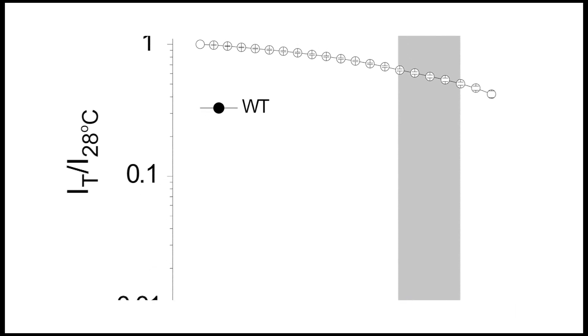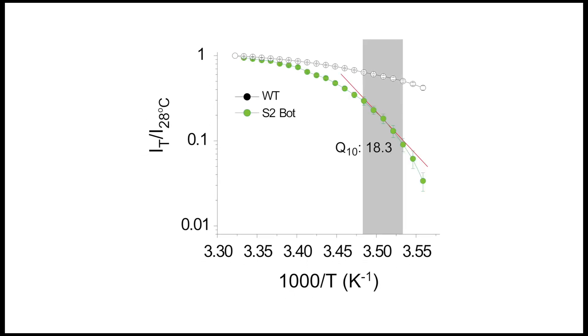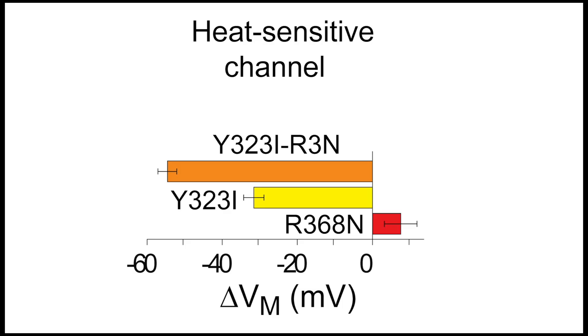We systematically changed the polarity of sites that are believed to undergo changes in solvation during the gating cycle and found that these mutants have now become temperature sensitive. In fact, some of these mutants are as temperature sensitive as naturally occurring TRP channels. Another principle that we tested is the idea of a reciprocal relationship between voltage dependence and temperature sensitivity. Most naturally occurring temperature-sensitive channels have low voltage sensitivity, and it has been proposed that this would be expected for an allosteric system where more than one stimulus controls the function of the channel. We show that we could make our mutants more temperature sensitive when we neutralize the charges that contribute to voltage dependence of the channel.